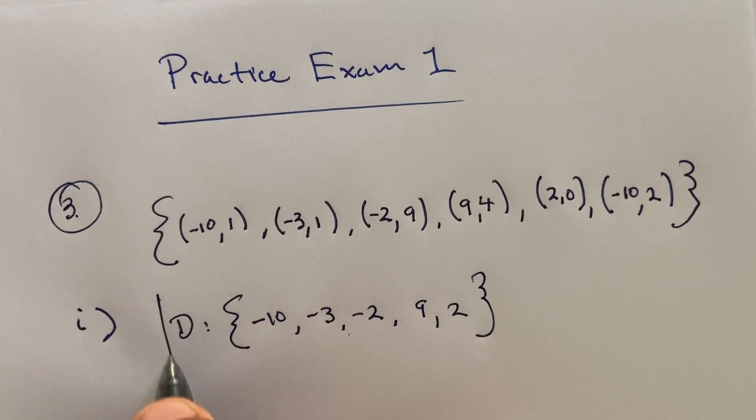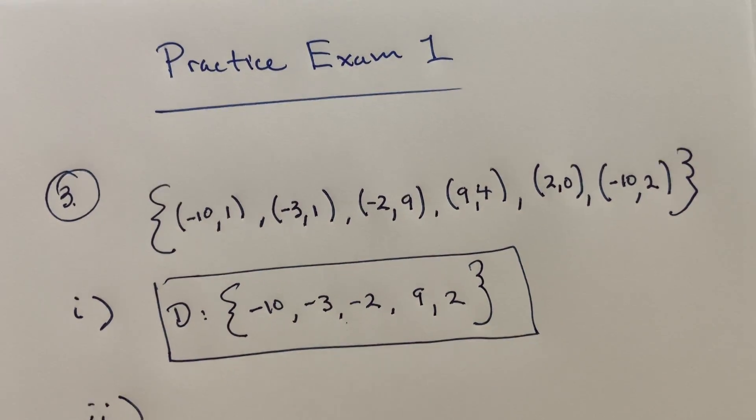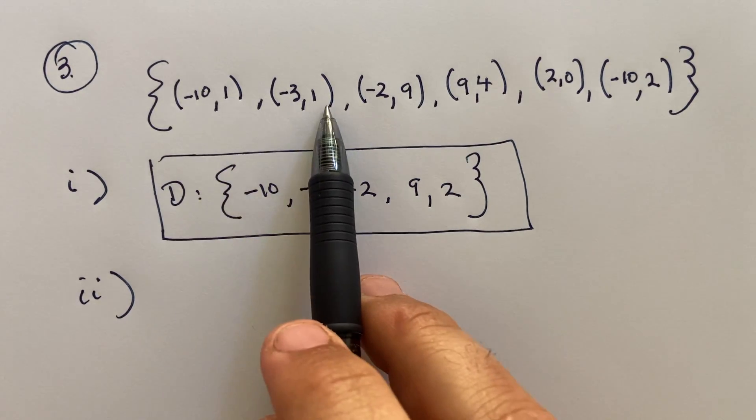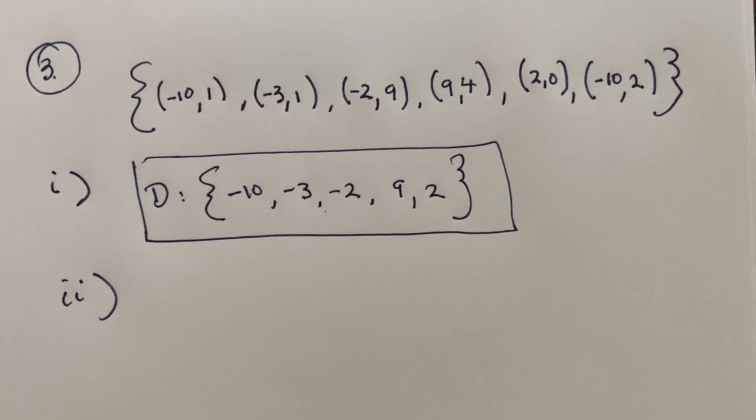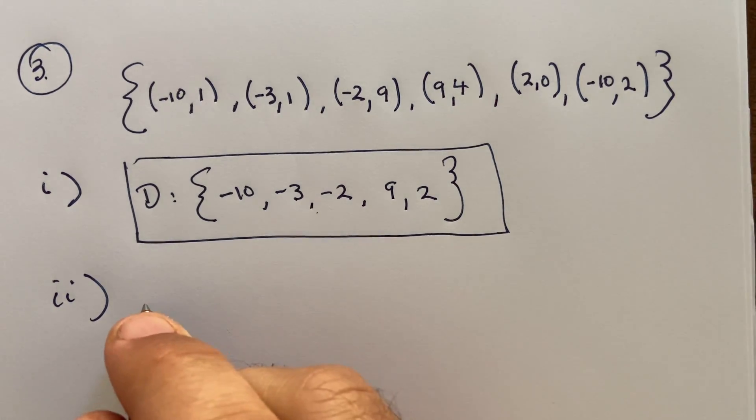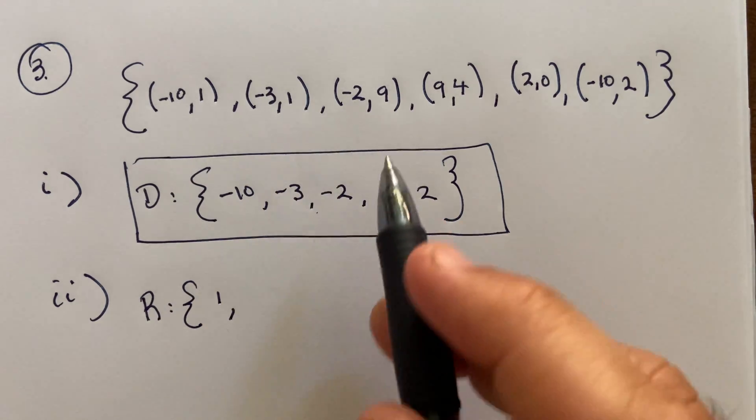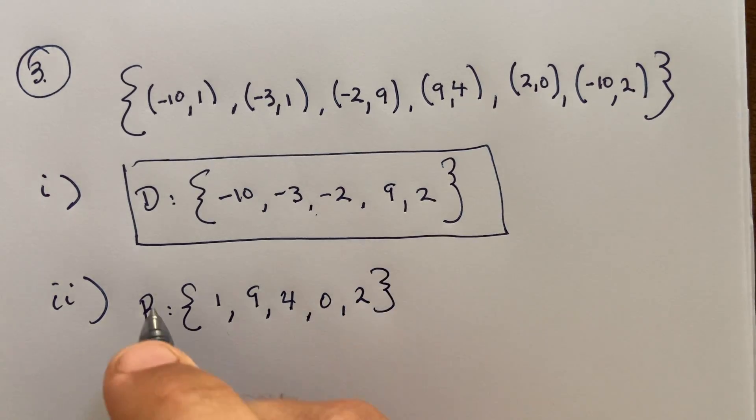Part two for this relation, the range would be the set of all the outputs, in other words, the set of the second components. So write one—one is repeated so I'll just write it once—nine, four, zero, two. So this would be the range for that relation.